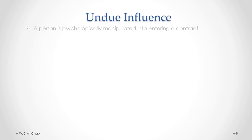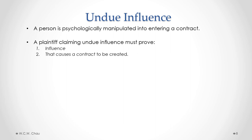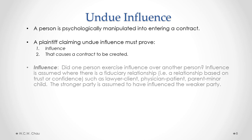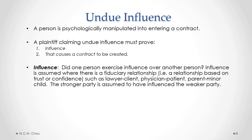The contractual defect of undue influence is where someone has been psychologically manipulated into entering a contract. To prove undue influence, a plaintiff must show two things: first, influence, and second, that that influence causes a contract to be created. Did one person exercise influence over another person? Influence is assumed where there is a fiduciary relationship between the two parties. A fiduciary relationship is considered to be a relationship based on trust or confidence, such as the relationship between a lawyer and a client, a physician and a patient, or a parent and a minor child. The stronger party in a fiduciary relationship is assumed to have influenced the weaker party.